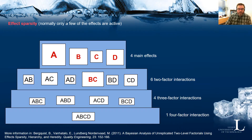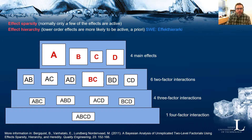If we go to effect hierarchy, it states that lower order effects are more likely to be active a priori, or beforehand. Before we know anything, it is more likely for a main effect to be active than a two-factor interaction, and so on.